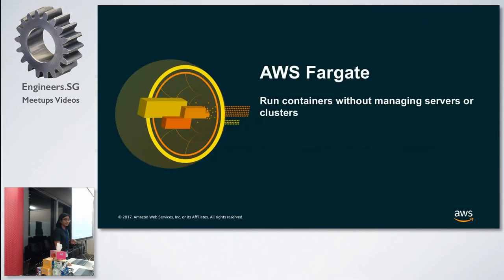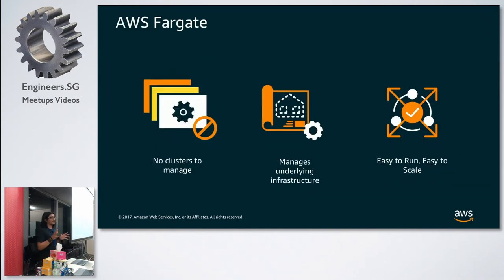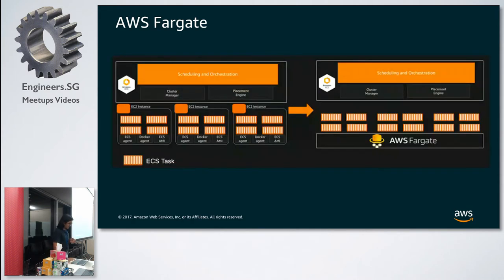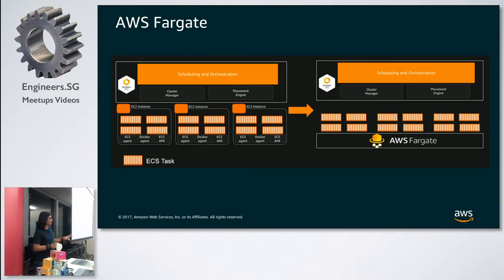We also announced AWS Fargate — run containers without managing servers or clusters. It's a new technology for deploying and managing containers without handling any underlying infrastructure. Simply put, Fargate is like EC2 but instead of getting a virtual machine you get a container. Amazon ECS and EKS both support two models: the Fargate launch type and the EC2 launch type. With Fargate you package your application in a container, specify the CPU and memory, and just launch your containers.